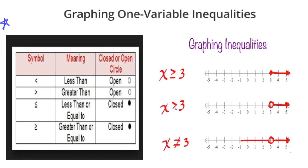Down here at the second graph, we have x is greater than 3. When we graph this, we're going to use an open circle, and that represents all the values to the right of 3. Because it's an open circle, 3 cannot be a solution — it has to be to the right of 3.